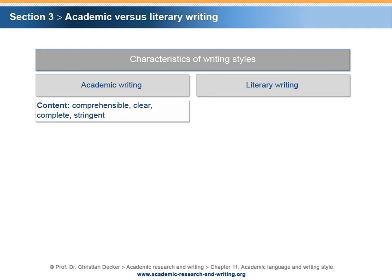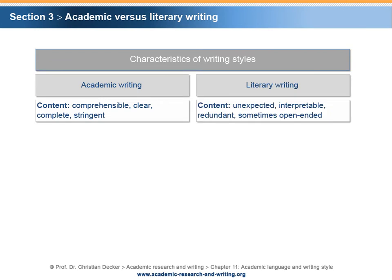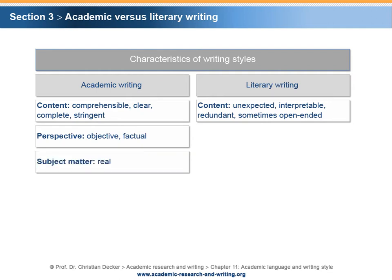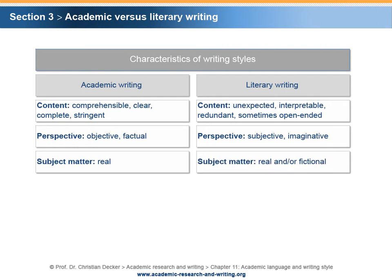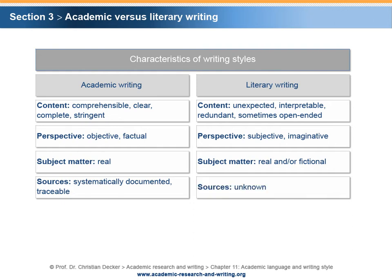Accordingly, the academically written content of a research project is always comprehensible, clear, complete, and stringent. In distinct contrast, literary written content may provide surprising, unexpected information, may allow individual interpretations, may be redundant due to stylistic reasons, and may even end without a final result or conclusion. Whereas an academic perspective has to be objective and factual, dealing with real-life phenomena, the author of a literary piece writes from a subjective and imaginative perspective about subject matters that are either real, fictional, or a mix of both. A research project has to be objective and accurately documented, based on traceable sources.